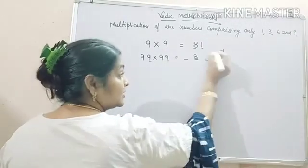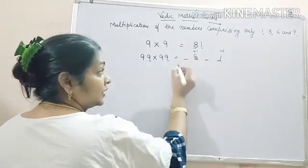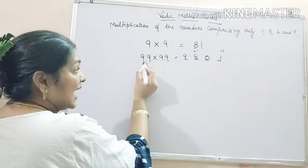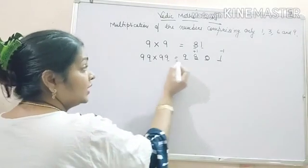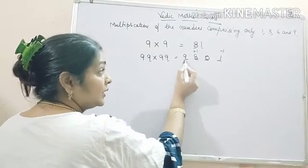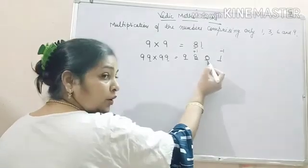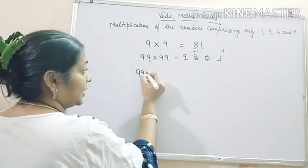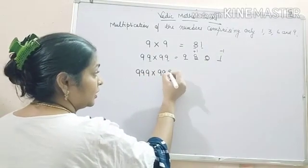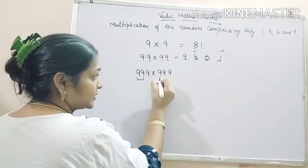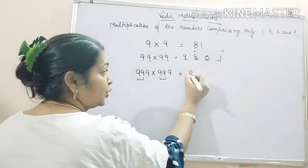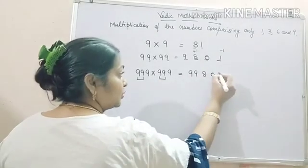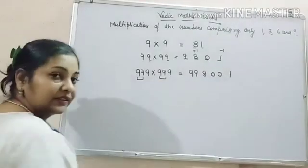Same: minus 1, plus 1. It will be 9801. That means for every extra 9, you have to put 9 before 8 and 0 before 1. Suppose there are triple 9. So how many 9s are extra? 2. Put 2 nines for the extra 9, and 8 for this, 2 zeros and 1. This is our answer.